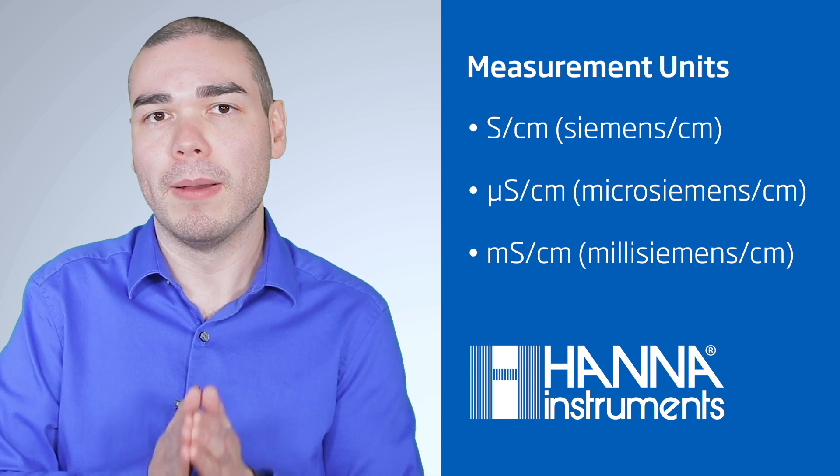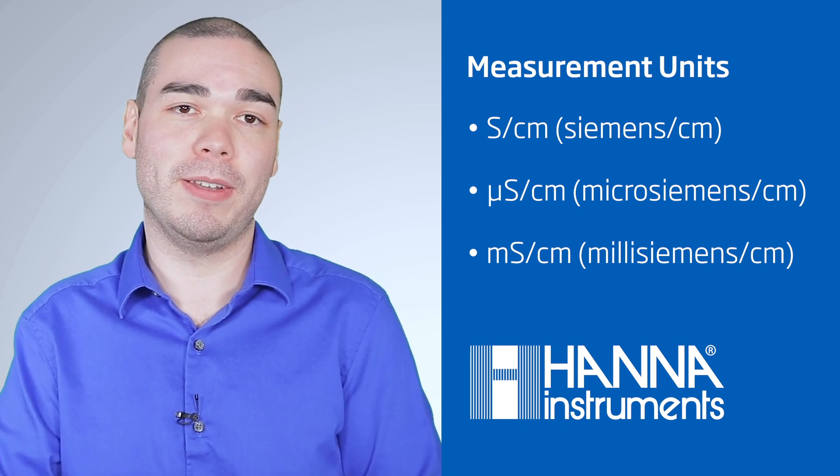That's why conductivity is measured as the ability of the substance to conduct an electrical current per area. Some examples of measurement units include Siemens per centimeter, microsiemens per centimeter, and millisiemens per centimeter.